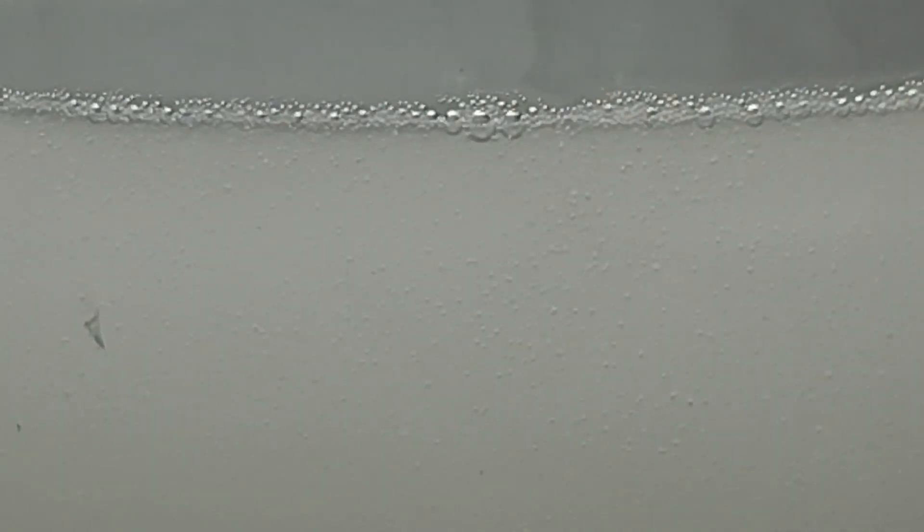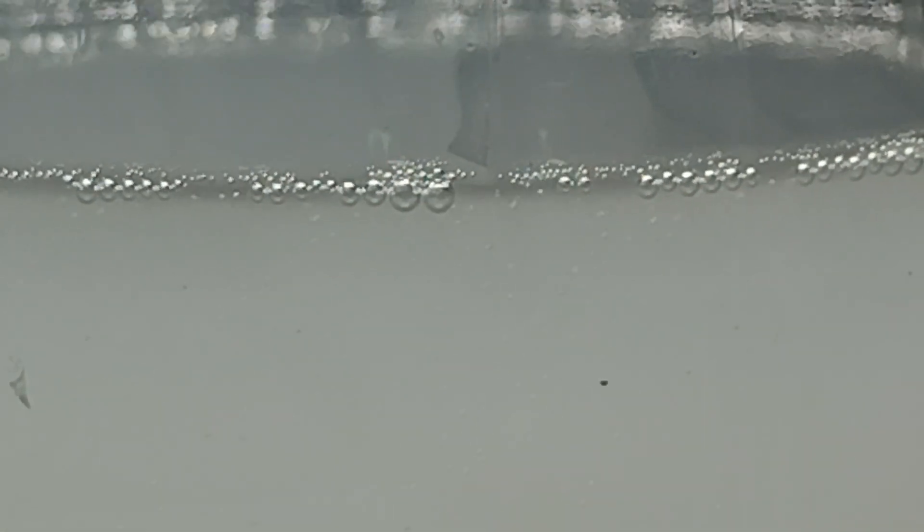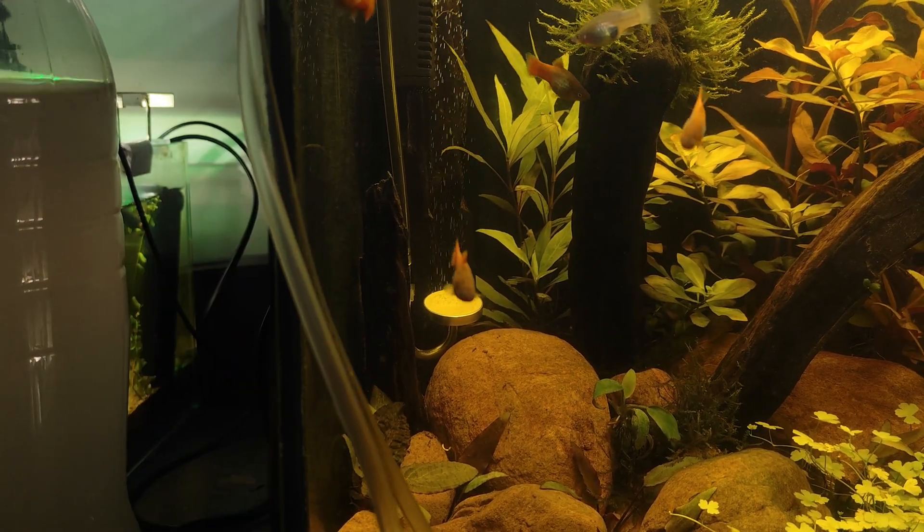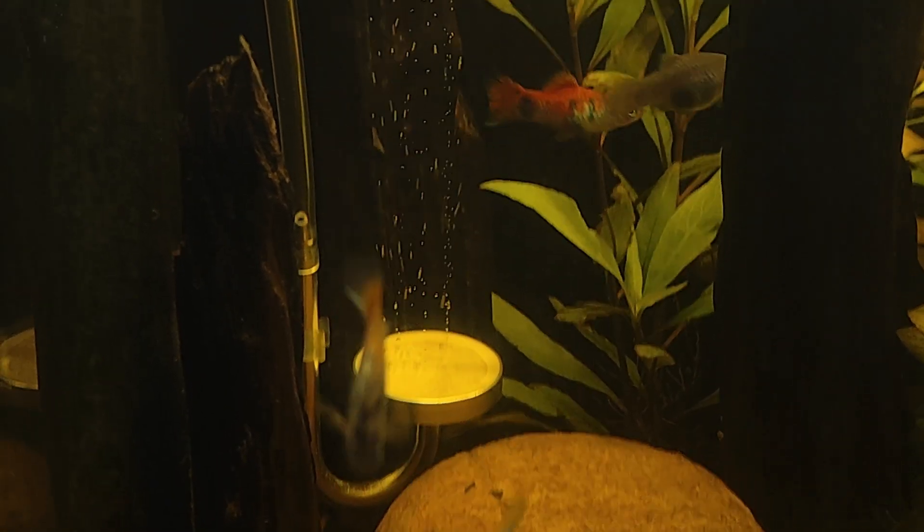Within a couple of hours, you should start seeing CO2 bubbles in the bottle. Look closely. You'll notice small bubbles rising to the top. And in the tank, the diffuser should already be releasing CO2. If it's not, give the bottle a gentle shake to jumpstart the process.